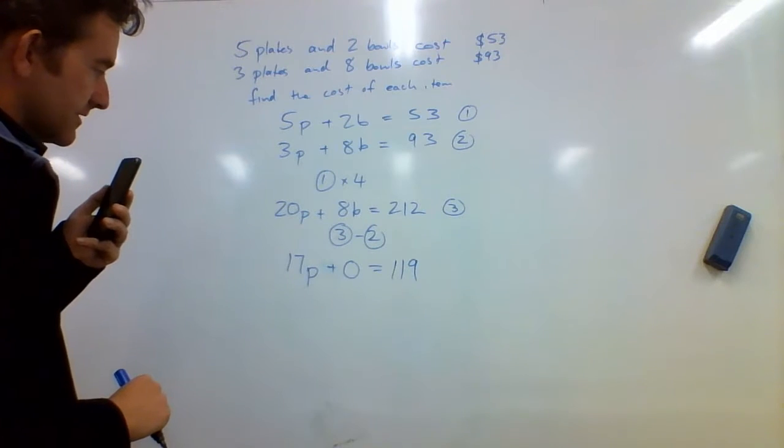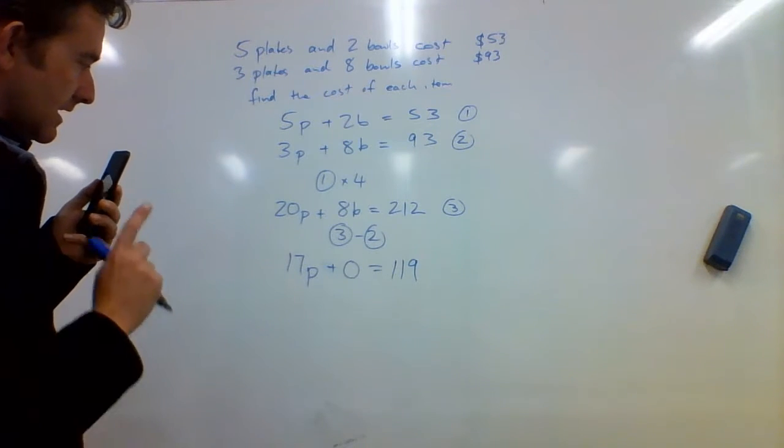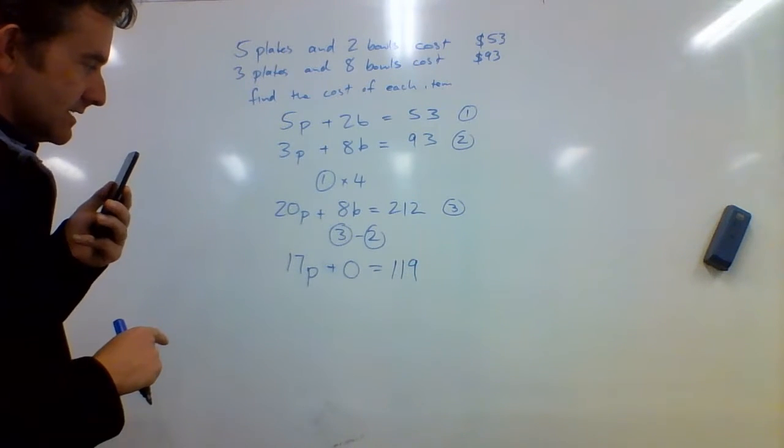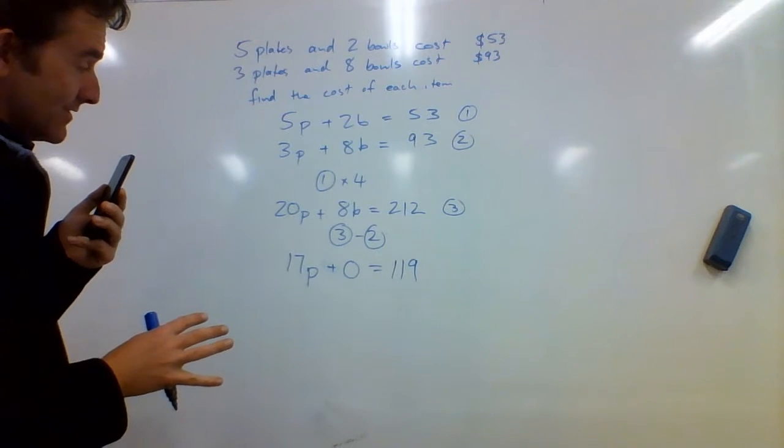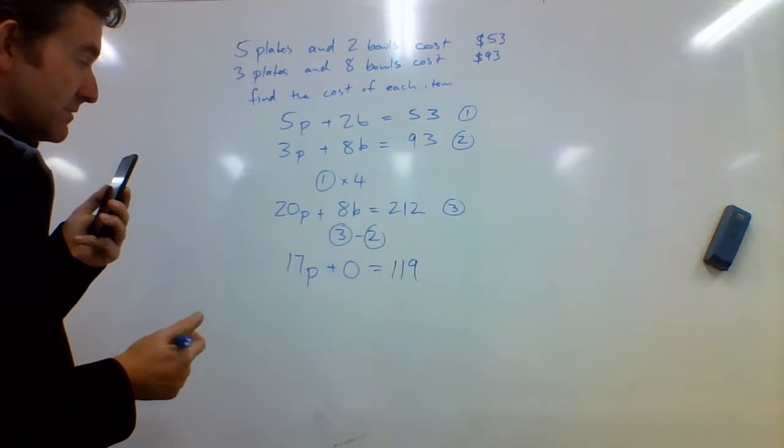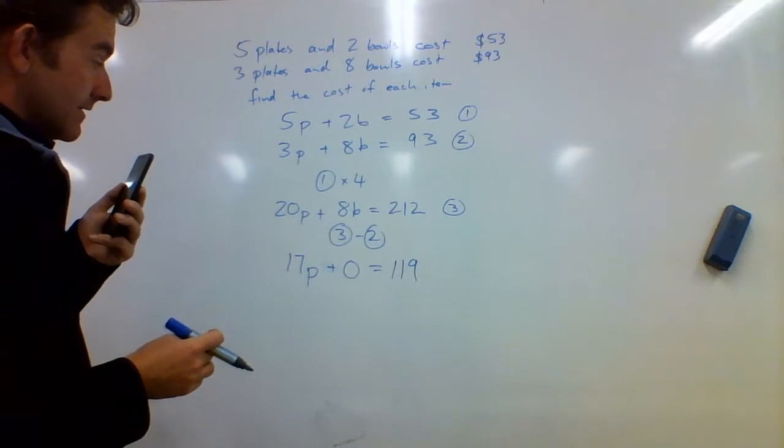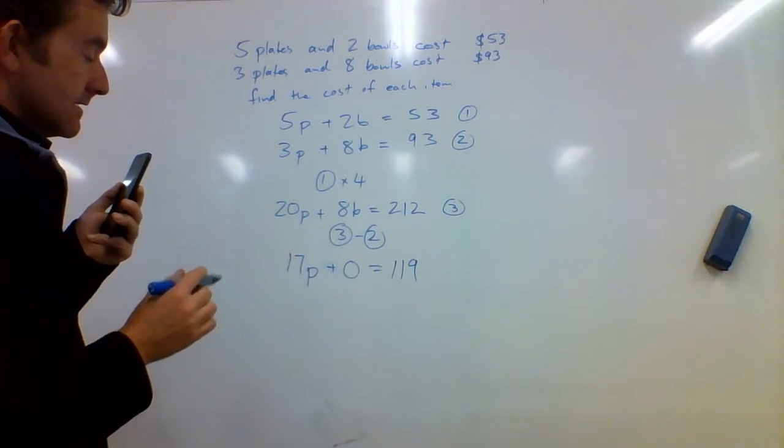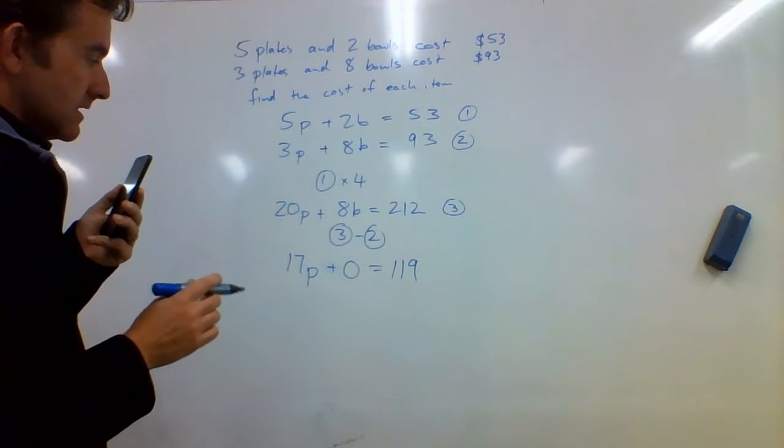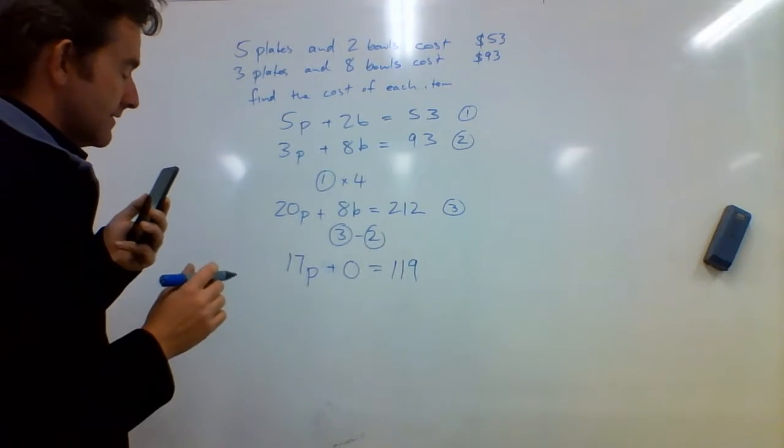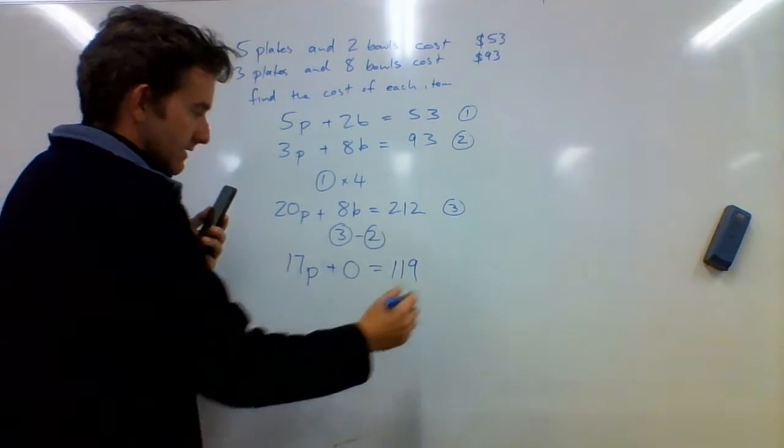Now, I'm not so good with my 17 times tables, so I'm not sure how many times 17 goes into 119. I'm betting it's going to be an even number of times. Questions are usually set up to be nice to you, so let me just think. I know that the multiples of 7 that end with 9... So I'm going to try 17 times 7 and just see if that works.